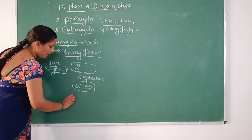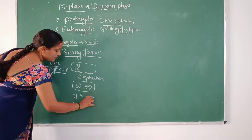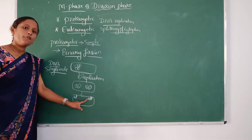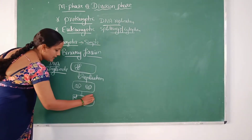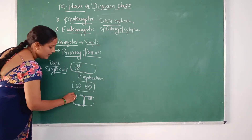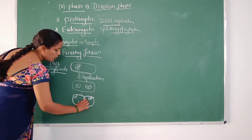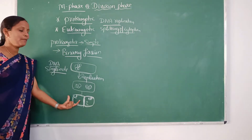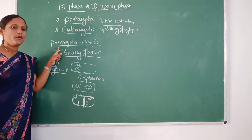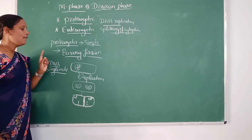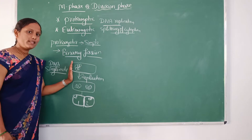These two produced copies will bind to the cell membrane. Followed by that, the cell membrane splits the cytoplasm into two, which results in the formation of two daughter cells. That is the very simple process of binary fission seen in prokaryotic cells.